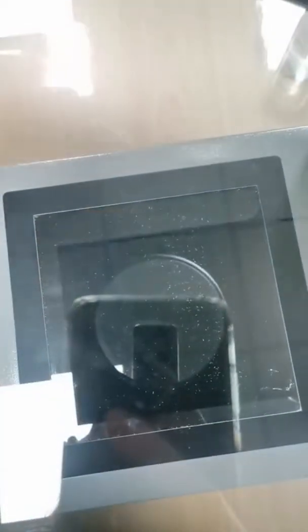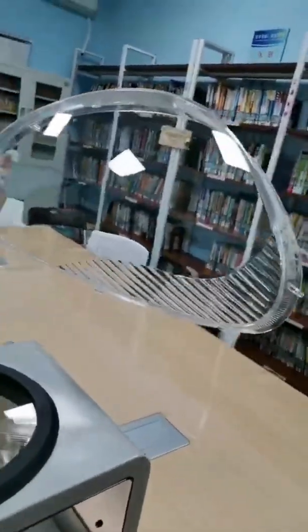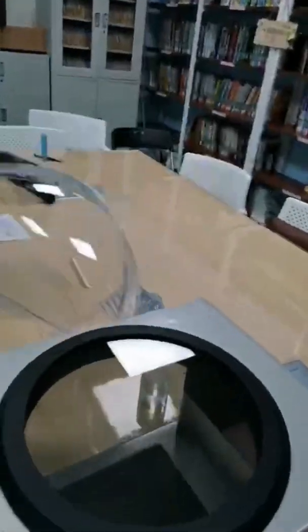Now let's try some other big objects such as a lampshade. It's totally transparent. Let's put it on our sample stage. We can see different areas have different color stress patterns.